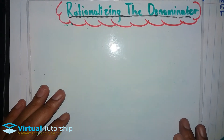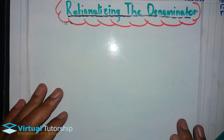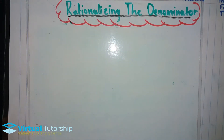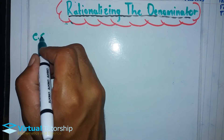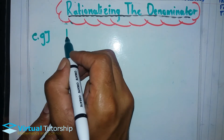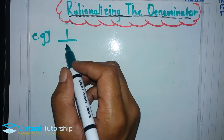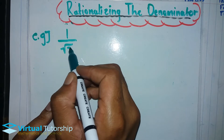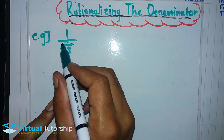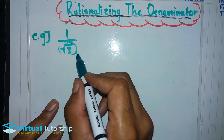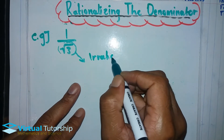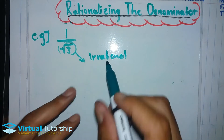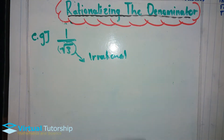Okay, so in today's lesson, we will talk about the rationalization of the denominator. Let's say we have an example of a fraction which is 1 over square root 3. This square root 3 is an irrational number.